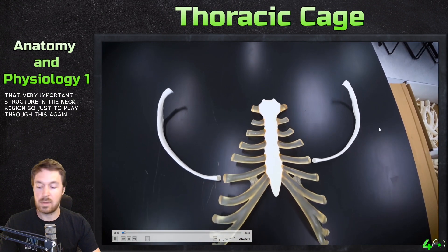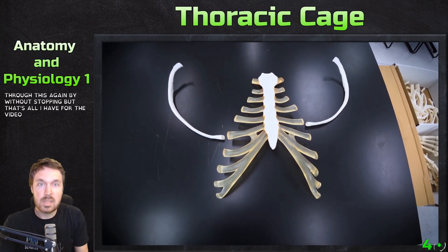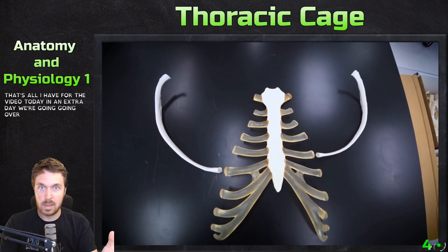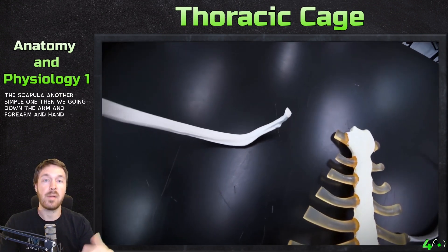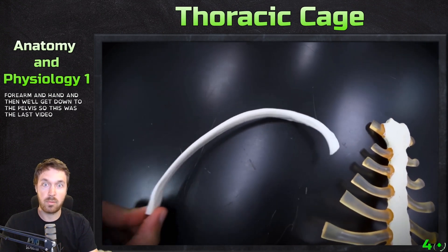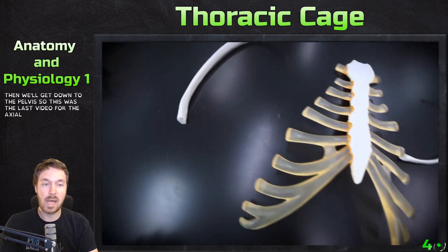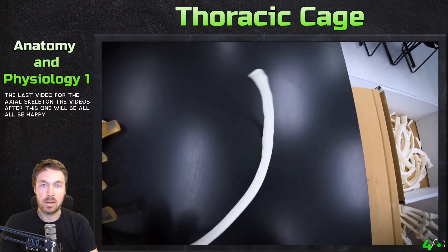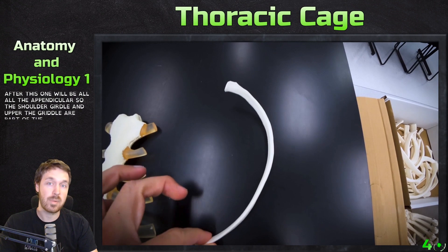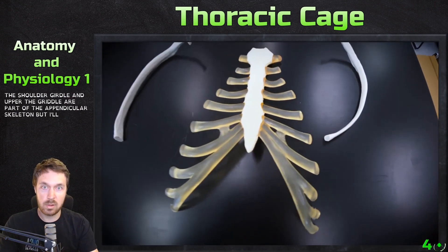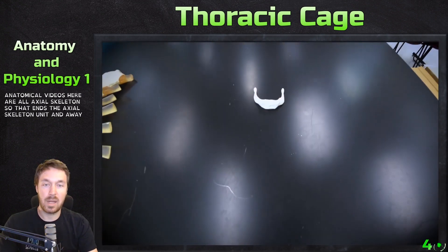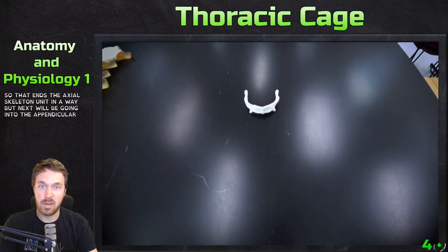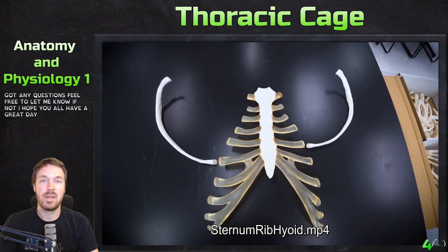That's all for this video. In the next video we're going to go over the clavicle and the scapula, and then we'll continue down the arm, forearm, and hand, and then the pelvis. This was the last video for the axial skeleton — all the bones covered in the last three anatomy videos are part of the axial skeleton. The videos after this will be appendicular, covering the shoulder girdle and pelvic girdle. If you have any questions, feel free to let me know. Hope you all have a great day — bye!